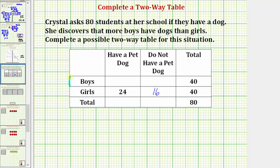Now let's focus on the boys. We know 40 boys were asked if they have a dog or not, and we also know more boys have dogs than girls. So this number here must be more than 24. It doesn't matter what it is as long as it's more than 24 but not more than 40. Let's just say 30 boys said they had a dog, and that means 10 boys did not have a dog, because 30 plus 10 does equal 40.